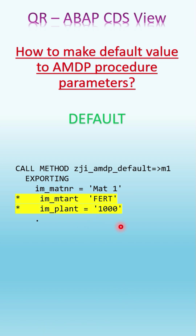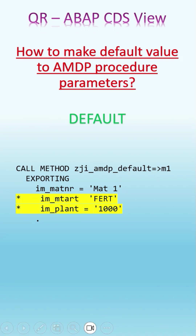It automatically comments out those two parameters, meaning they are optional. If you want to change these values, you can do so by either hardcoding values or through another parameter variable if you want to get the value at runtime and pass it to the method — it all depends on your business needs. This is how you can make some or all parameters of your AMDP procedure method work with default values, which can be very useful.